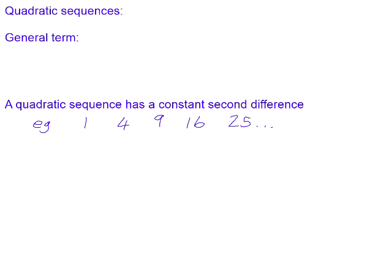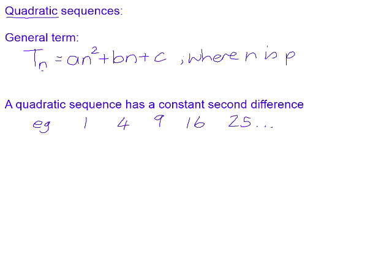In this video, we're going to have a look at some quadratic sequences. We've spent a lot of time looking at quadratic equations, so we're quite familiar with the general standard form of a quadratic. When we're referring to it in the context of a pattern, we talk about the general term as being Tn — the term value in the nth position. The general form of a quadratic is An squared plus Bn plus C, where n is the position number of the term and Tn is the value of the term.